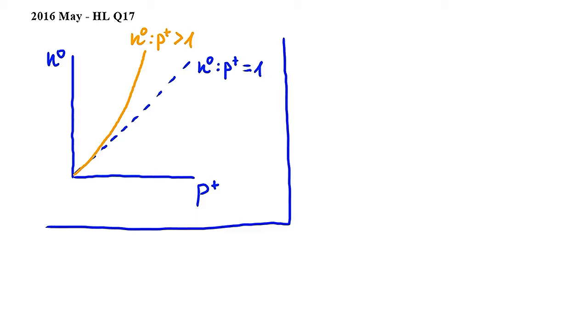The orange line represents how neutron number varies with proton number in stable nuclides, and the blue dashed line is the line where the neutron number to proton number ratio is equal to one.